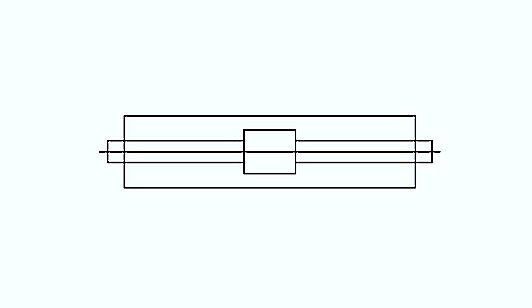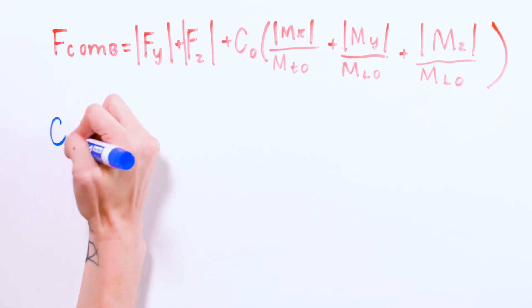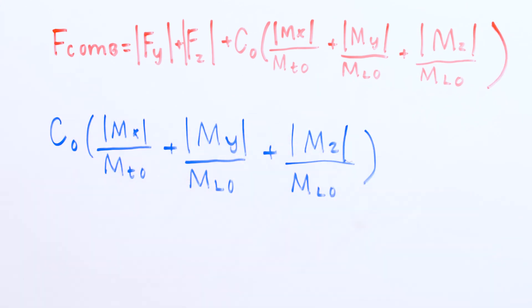We'll start with the case of a single linear bearing on a single guide rail. In this configuration, the bearing experiences forces in both the y and z directions, but not in the x direction, because that's the direction of motion. And moment loads can occur around any of the three axes, x, y, or z. This means there can be as many as five different components to the bearing's static load. Notice that to convert the static moments to static forces, we divide the applied moment by the moment capacity of the bearing, and then multiply that by the bearing's static load capacity. Also notice that we use the absolute values of the forces and moments in this equation.